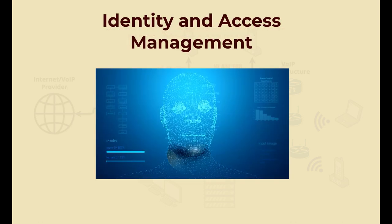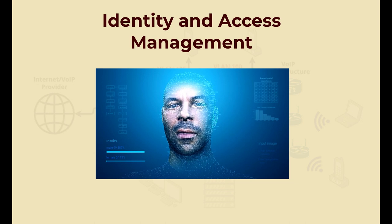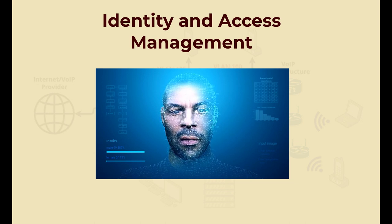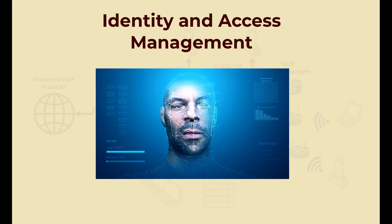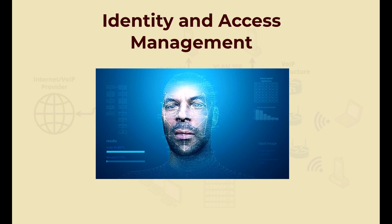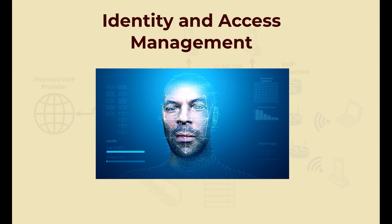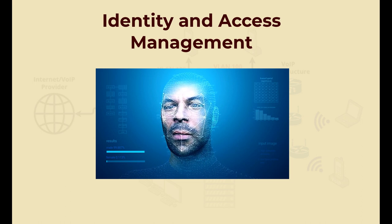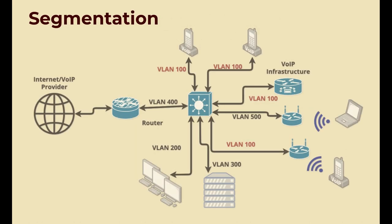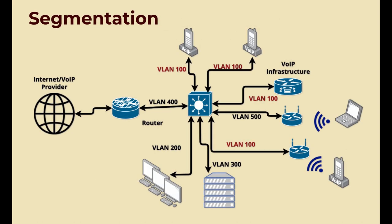Identity and Access Management, or IAM, must include enforcing least privilege, separation of duties, and need-to-know for each business role. These restrictions help limit what a TA can access once he has compromised a user device or user account. IAM must also include accountability — the ability to trace any transaction back to who executed it and when. Simple network segmentation using VLANs enables more granular control over the traffic to and from highly sensitive and categorized systems. When the VLAN access control lists are appropriately set, what a TA on a network can see is severely limited.